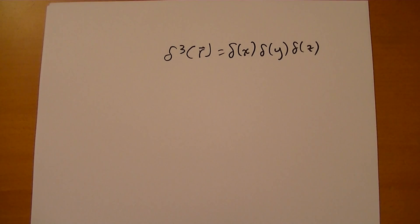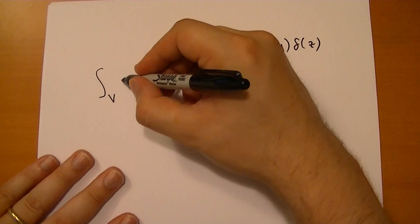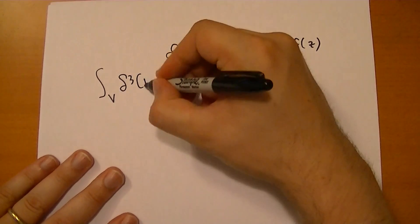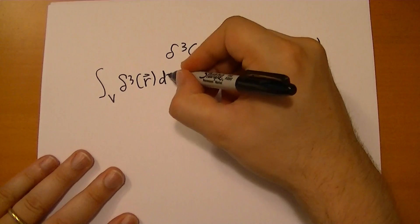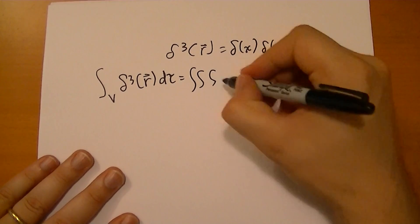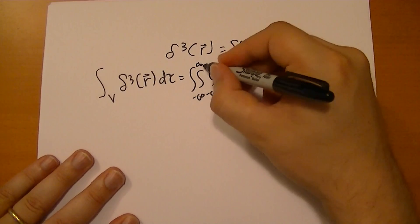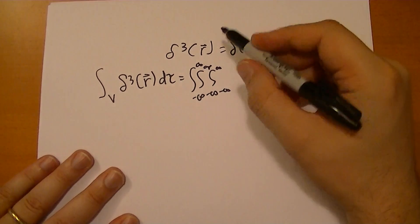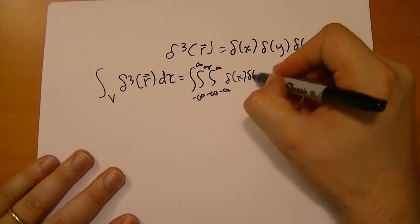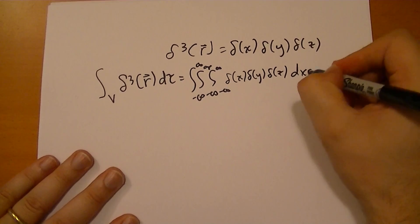And the integral, we're going to take all space of δ³(r) dτ. That's just written out this way. All of these from negative infinity to positive infinity, and I can't write infinities for some reason, of dx, dy, dz.